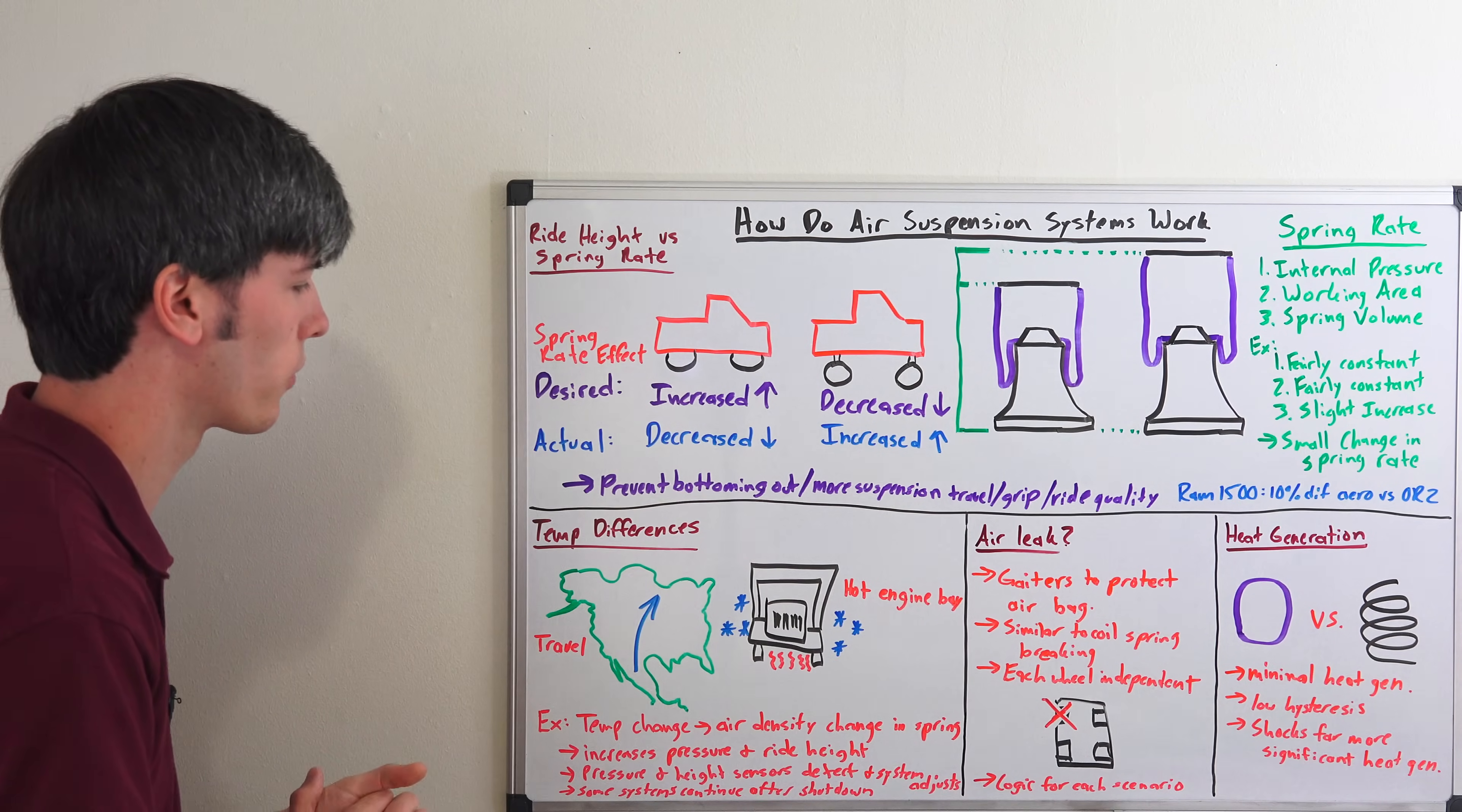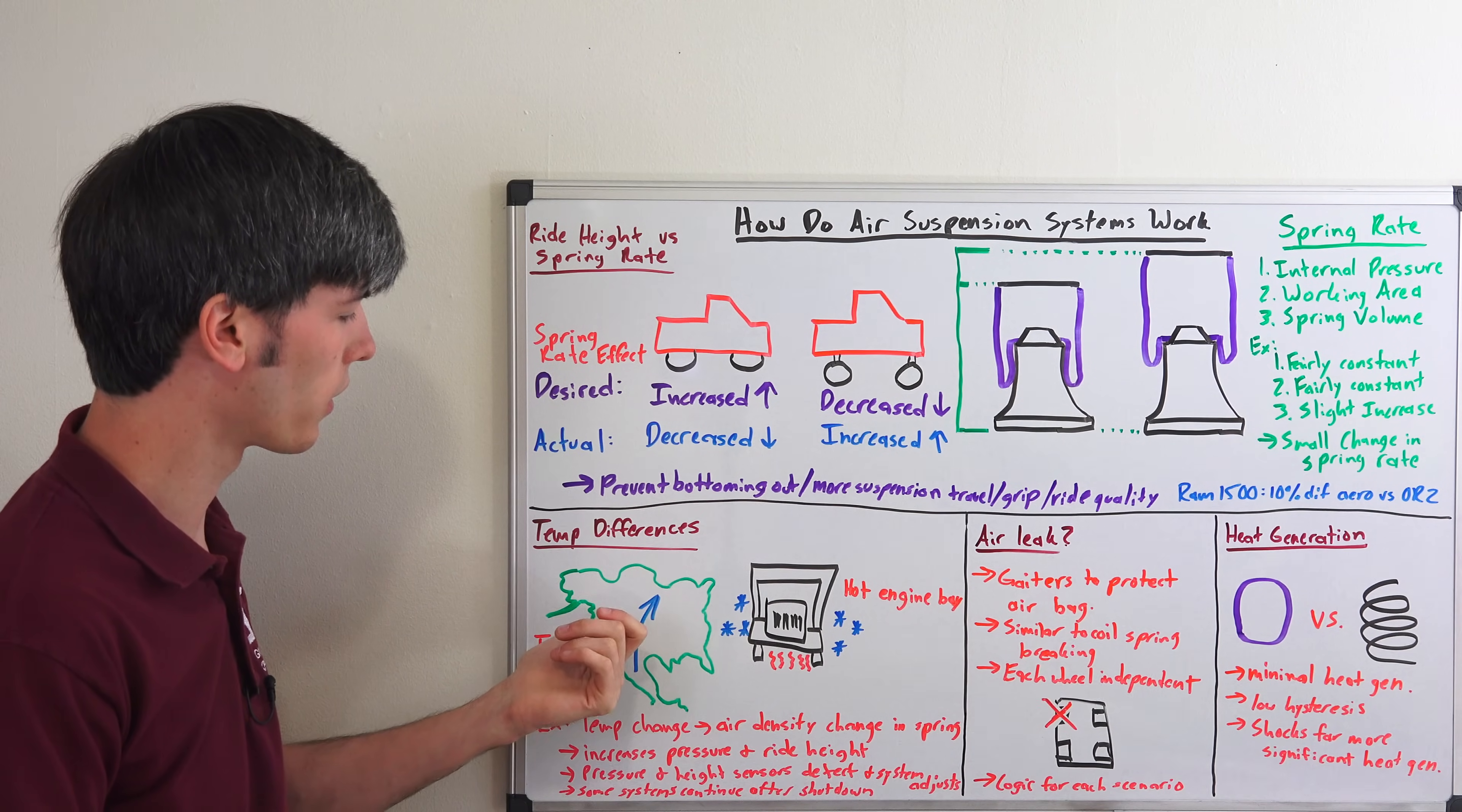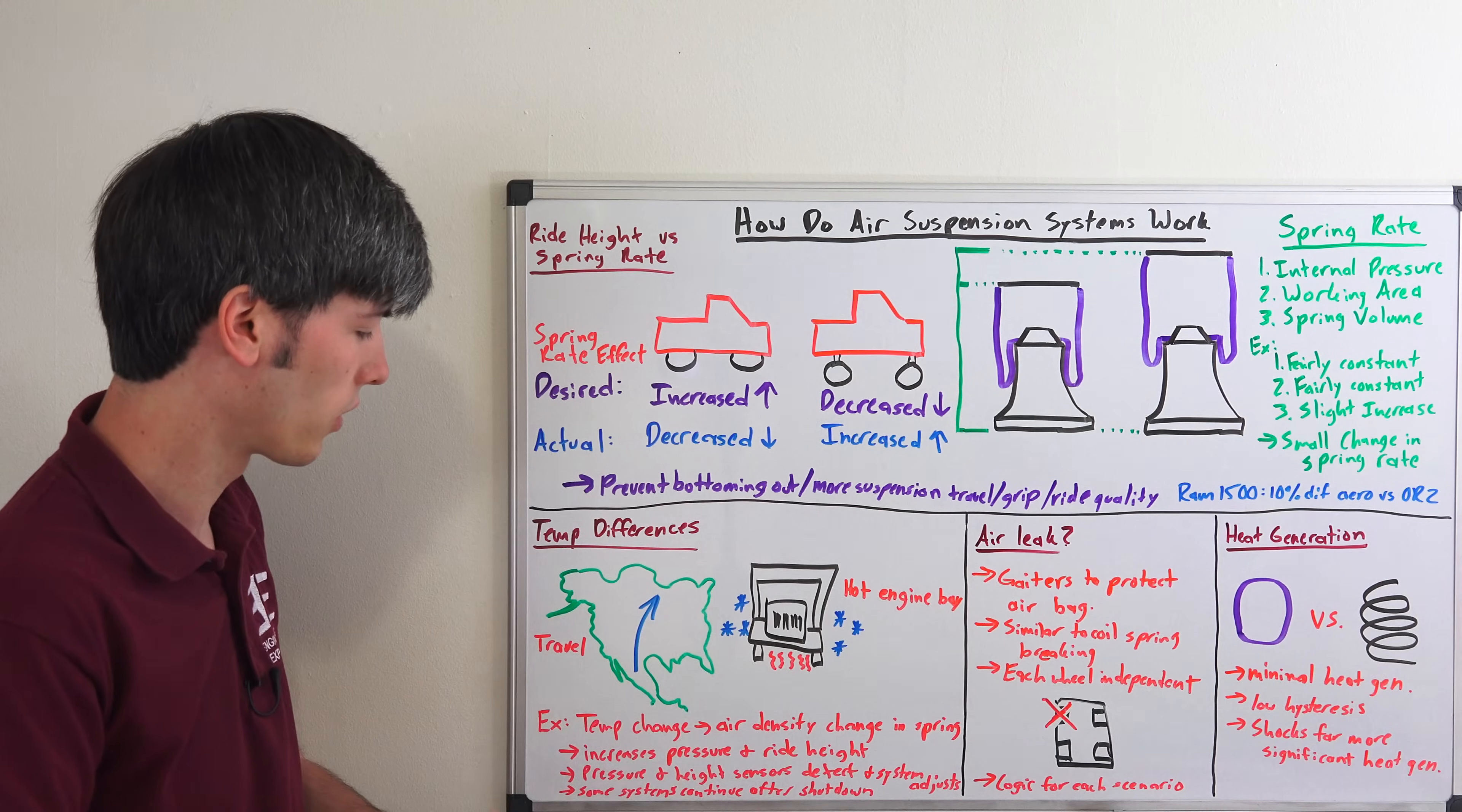Moving on, how do temperature differences affect the suspension system? For example, if you were to drive from hot Mexico up to Canada, this will be a very slow change in temperature and so it would be pretty easy for the system to adjust to it. Something that would be a bit more extreme: let's say you live up in Canada and it's minus 20 degrees outside. You turn on the car and so that engine bay heats up, and as that engine bay heats up it heats up those air springs.